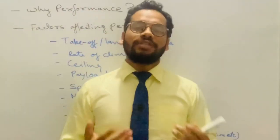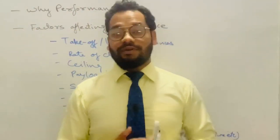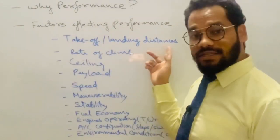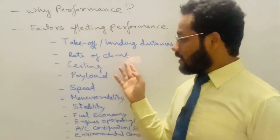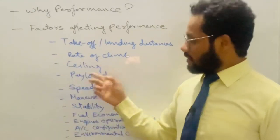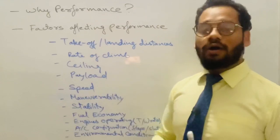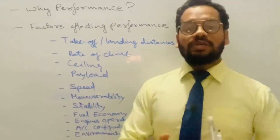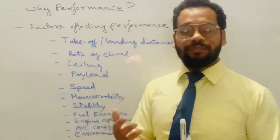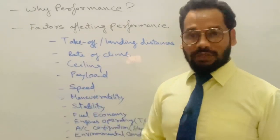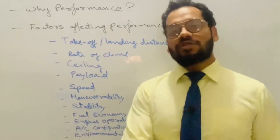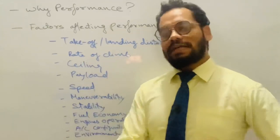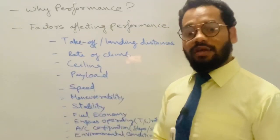To summarize the factors affecting airplane performance: takeoff and landing distances, rate of climb, ceiling, and payload range all affect airplane performance. Speed is another factor — the airplane needs different speeds at different phases of flight, from takeoff through cruise, climb, descent, and landing. So speed also affects airplane performance.